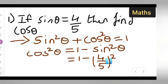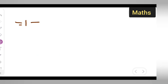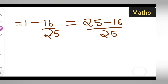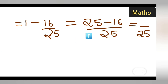So it becomes 1 minus 4 squared over 5 squared, which is 1 minus 16 upon 25. This equals 25 minus 16 upon 25, and 25 minus 16 gives us 9. So we get 9 upon 25.